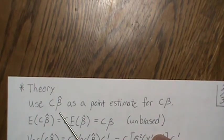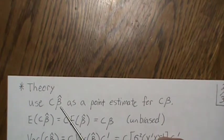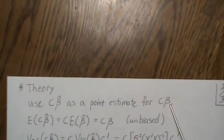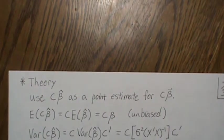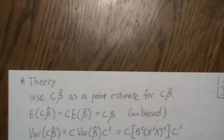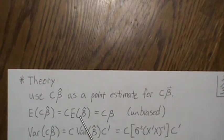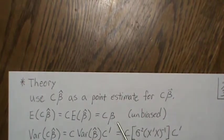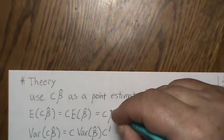Since we're testing C*beta, a natural point estimate is C*beta_hat. Let's examine the expected value of C*beta_hat, where beta_hat is the least squares estimate. C is a known constant so it comes out front, and since least squares estimates are unbiased, this gives an unbiased estimate for C*beta.